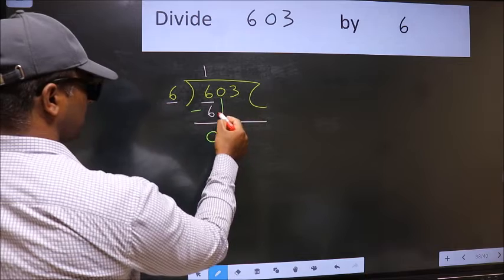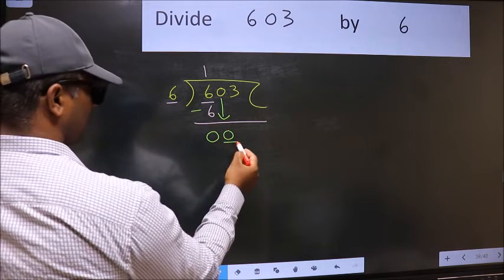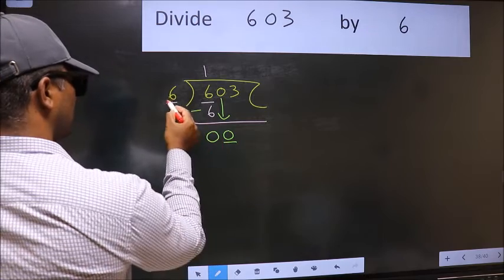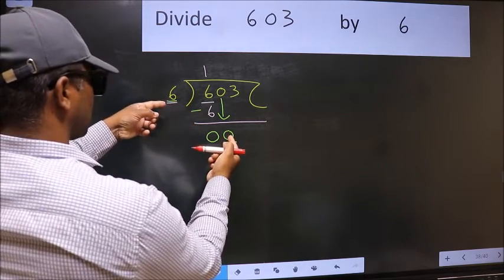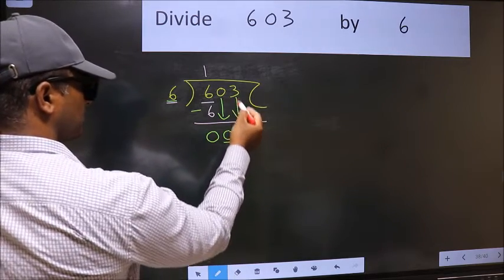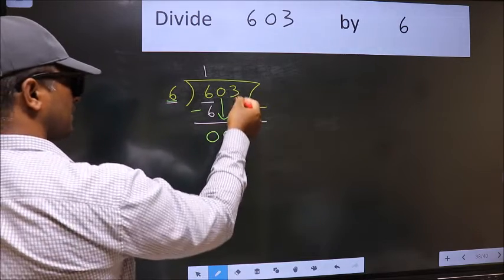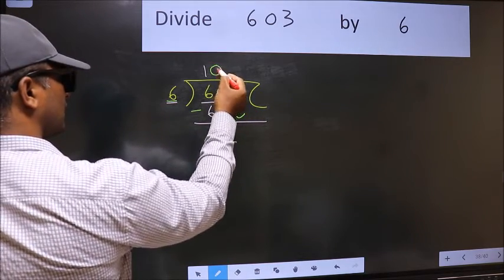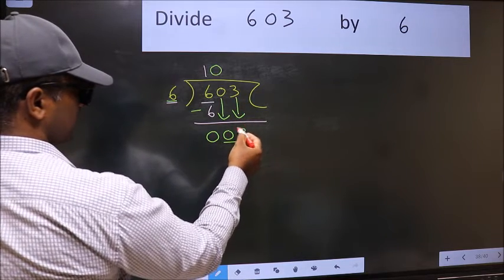After this, bring down the beside number. So 0 down. Now here we have 0 and here 6. 0 is smaller than 6, so we should bring down the second number. And the rule to bring down the second number is we should put 0 here. Then only we can bring this number down.